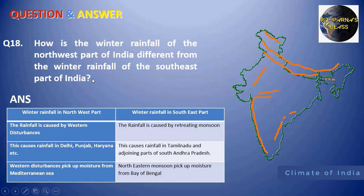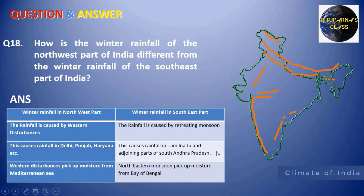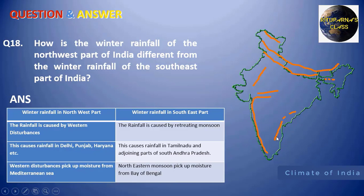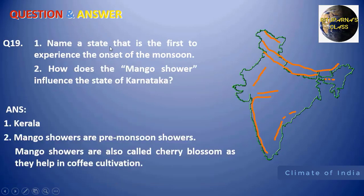Next: how is the winter rainfall of the northwestern part of India different from that of the southeastern part? During winter, only two parts of India receive rainfall. In the northwestern part, rainfall is caused by western disturbances; in the southeastern part, it is caused by the retreating monsoon. The northwestern states are Delhi, Punjab, and Haryana; the southeastern region is Tamil Nadu and adjoining parts of Andhra Pradesh. The moisture source for western disturbances is the Mediterranean Sea, while for the northeast monsoon it is the Bay of Bengal.